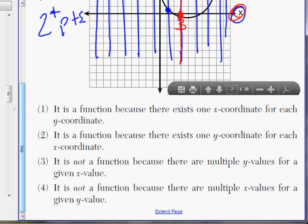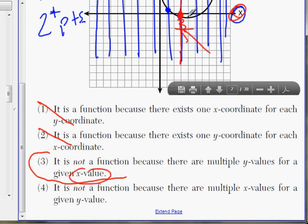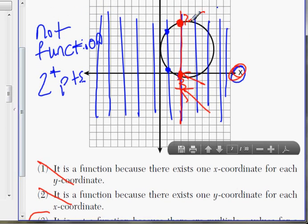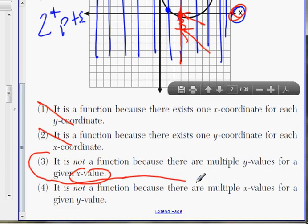So let's look at the choices. It's not a function, well, it can't be choice one, because they're saying that it's a function. It can't be choice two. And it's down to choice three and four. And the correct answer is choice three. Because it's not a function, because there are multiple y values. There's two y values in this example for a given x value. The x value is three, and there's two y values, because it hits one point over here. And at the same time, it hits another point on the top over here, like, two different y values. So there's choice three.